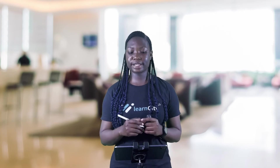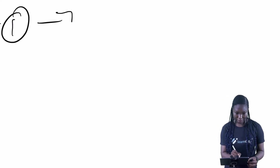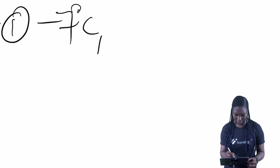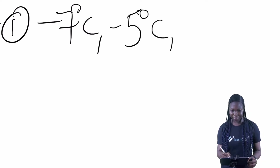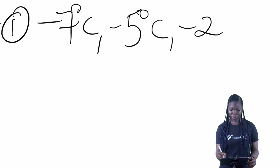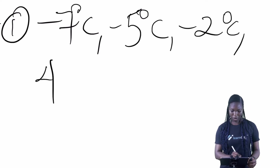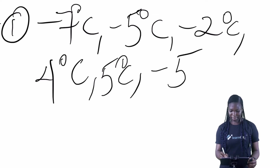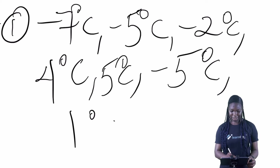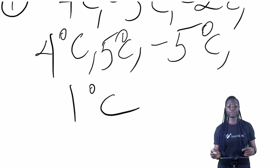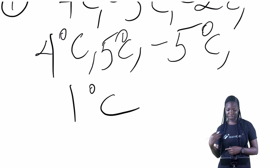Today we will be covering more examples on mode, median, and range. Our first example says: find the mode, median, and range of the following. Here we have minus 7°C, minus 5°C, minus 2°C, 4°C, 5°C, minus 5°C, and 1°C. So we have to find the mode, median, and range.